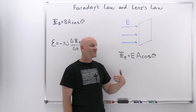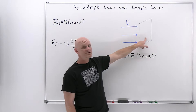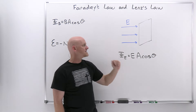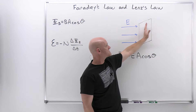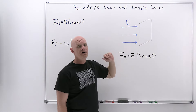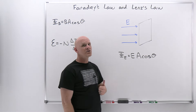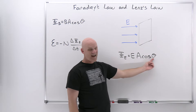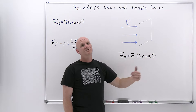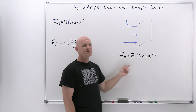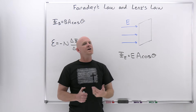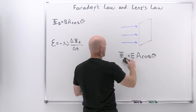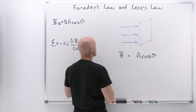Theta here is defined in a very specific way — it is not the angle between the surface and the electric field, but the angle between the normal to the surface and the electric field. When the surface is perpendicular to the electric field, the electric field is zero degrees from the normal, so cosine of zero is one and the electric flux reaches its maximum. It turns out that magnetic flux works exactly the same way, but instead of a surface in an electric field, we now look at a surface in a magnetic field.